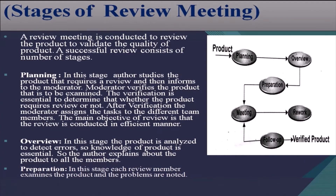Stages of the review meeting: a review is conducted as a meeting and is conducted to validate the quality of the product. A successful review consists of a number of stages. The first stage is the planning stage. In this stage, the author studies the product that requires a review and then informs the moderator. The moderator verifies the product to determine whether it requires review or not. After verification, the moderator assigns tasks to different team members to ensure the review is conducted efficiently.